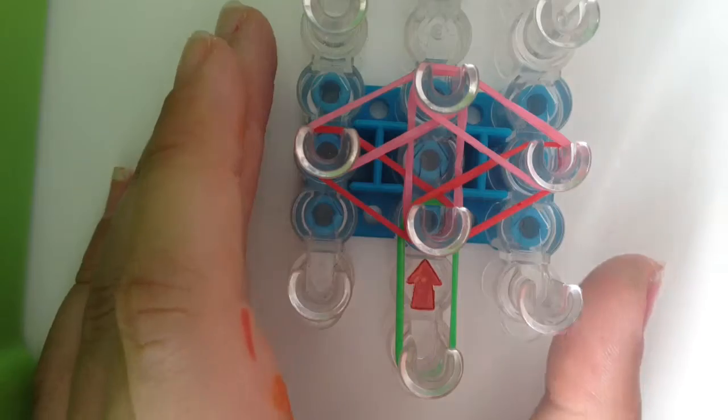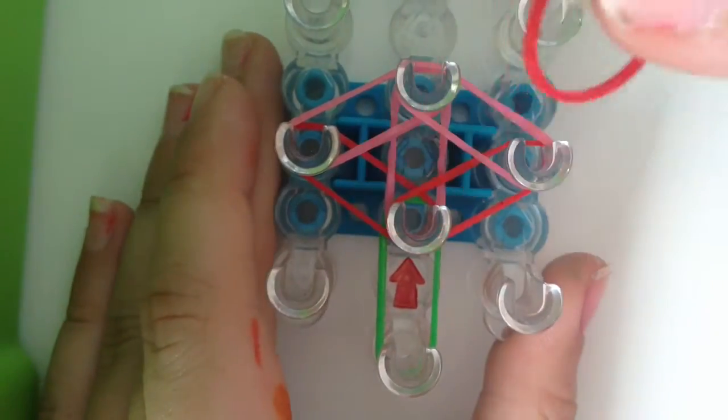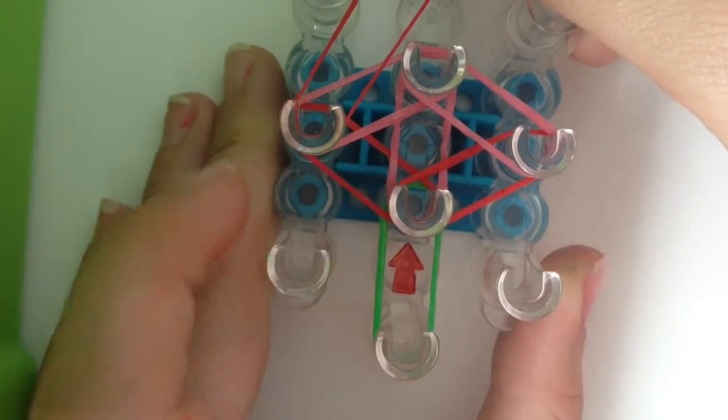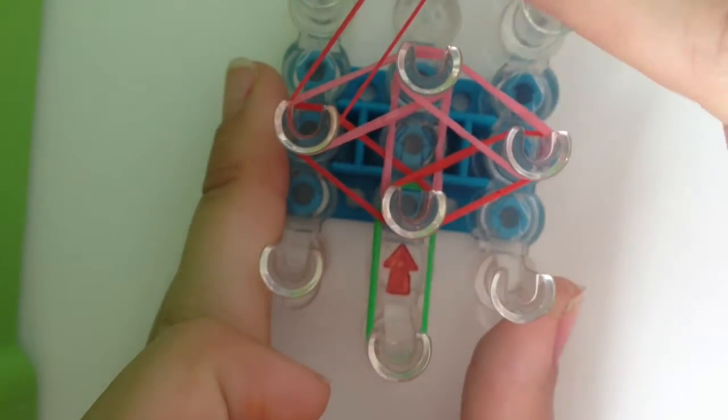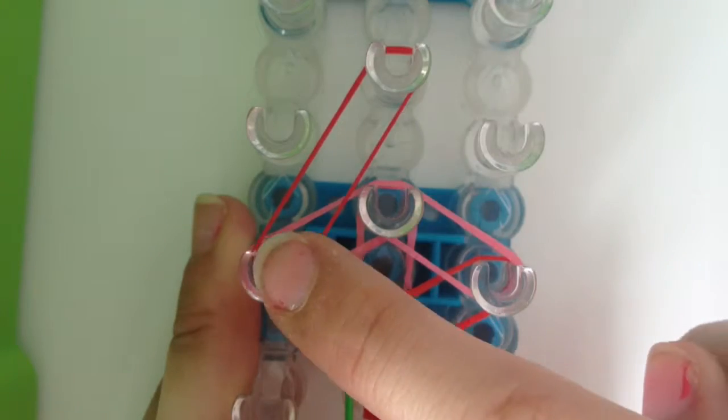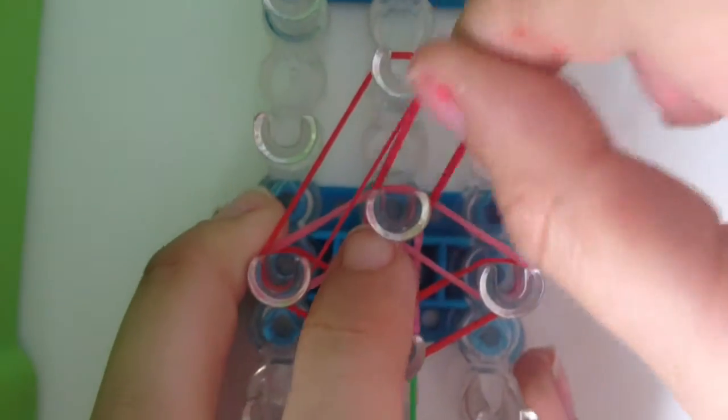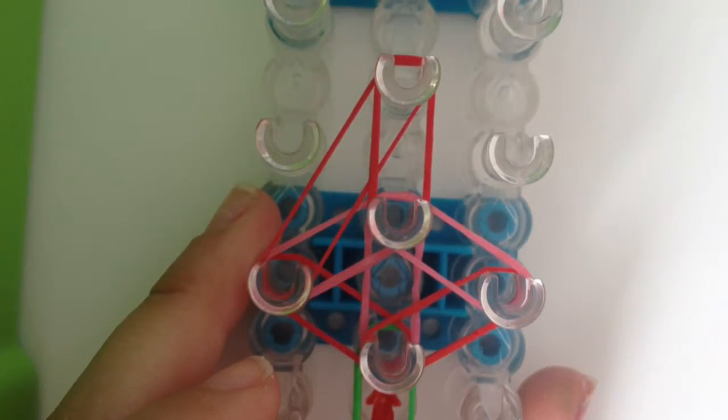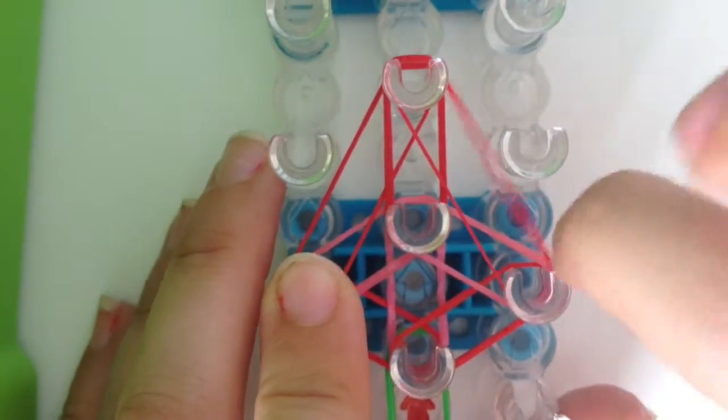Second you will place your red bands going from the second left pin to the fourth pin in the middle row like this. From here to here, here to here. You will get another red and place it from the middle row upwards. Then you will do what you did on the left side and copy that on the right side.